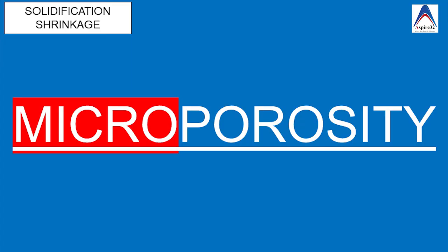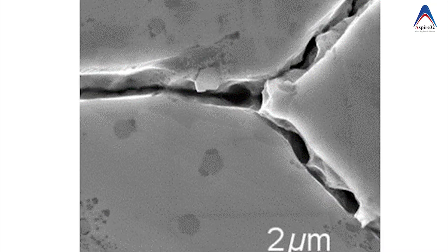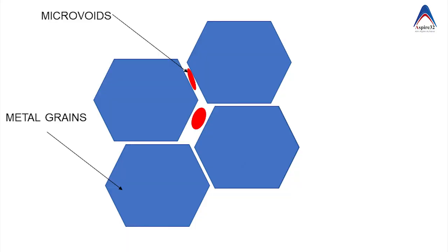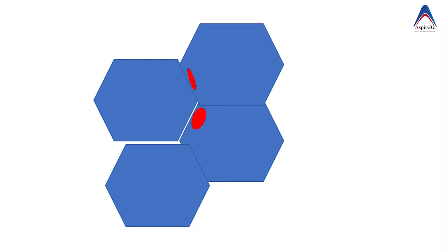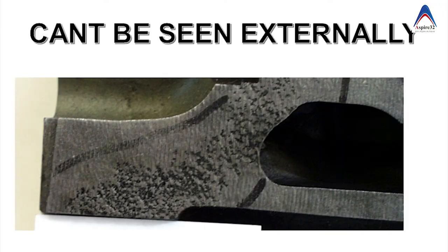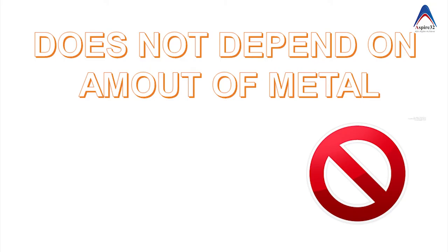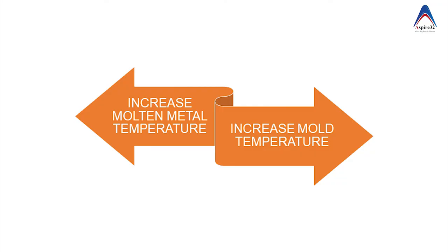The second type of solidification shrinkage porosity is micro porosity. As seen in SEM images, metal is made up of grains with microvoids between them. When the metal shrinks, the grains try to come closer. If there is sufficient time, microvoids segregate to one portion. However, if cooling happens very fast, there is not enough time and microvoids get trapped between the metal grains, leading to micro porosities. To prevent this, increase the molten metal temperature or the mold temperature, giving sufficient time for microvoids to escape as grains come closer.